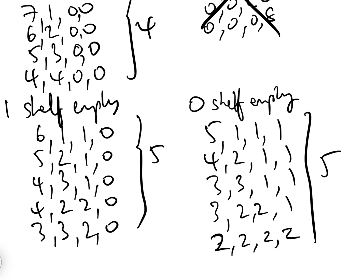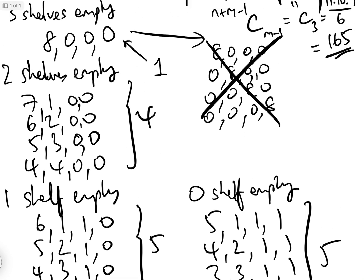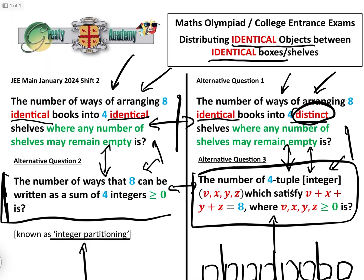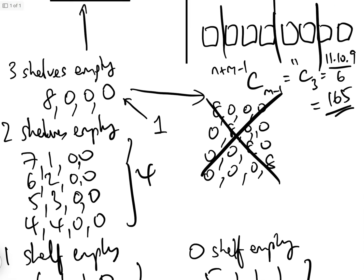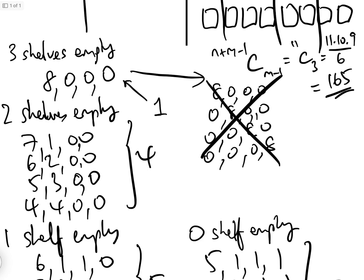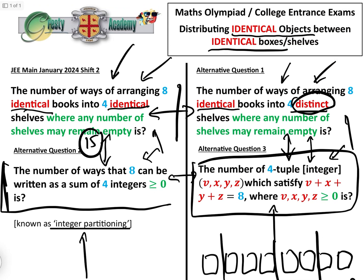So basically, the answer to the question is 5 add 5, add 4, add 1. The answer to the question is 15. So it is a very simple question, as long as you know that when you've got identical books into identical shelves, then you have to literally just list all of the possibles. And when you've got identical books into distinct shelves, you use stars and bars.